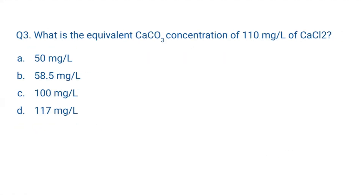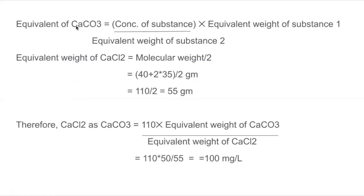Question 3: What is the equivalent calcium carbonate concentration of 110 mg per liter of calcium chloride? The concentration of calcium chloride is 110 mg per liter, and we need to find the equivalent concentration as calcium carbonate. The formula is: Equivalent of CaCO₃ = (concentration of substance × equivalent weight of CaCO₃) ÷ equivalent weight of the substance.